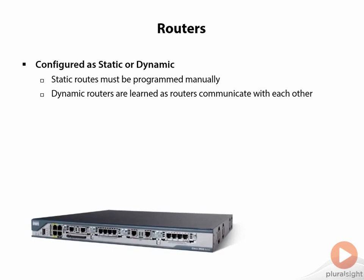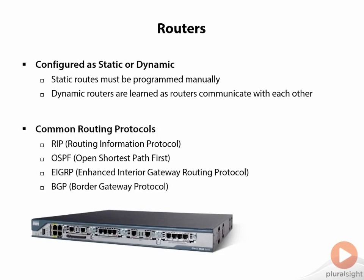An example of a router — you can see here a Cisco one — has a number of different types of interfaces and can span one or more networks. It can be fiber connected or copper connected; it really just depends upon the model and the price point.